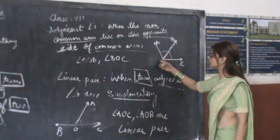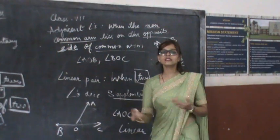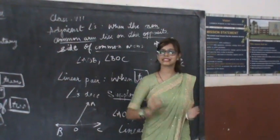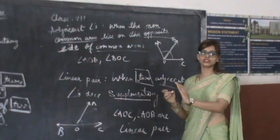So these are adjacent angles. AOB and BOC are adjacent angles. The literal meaning of adjacent is also side by side. So adjacent angles are those which are adjacent to each other, side by side to each other.